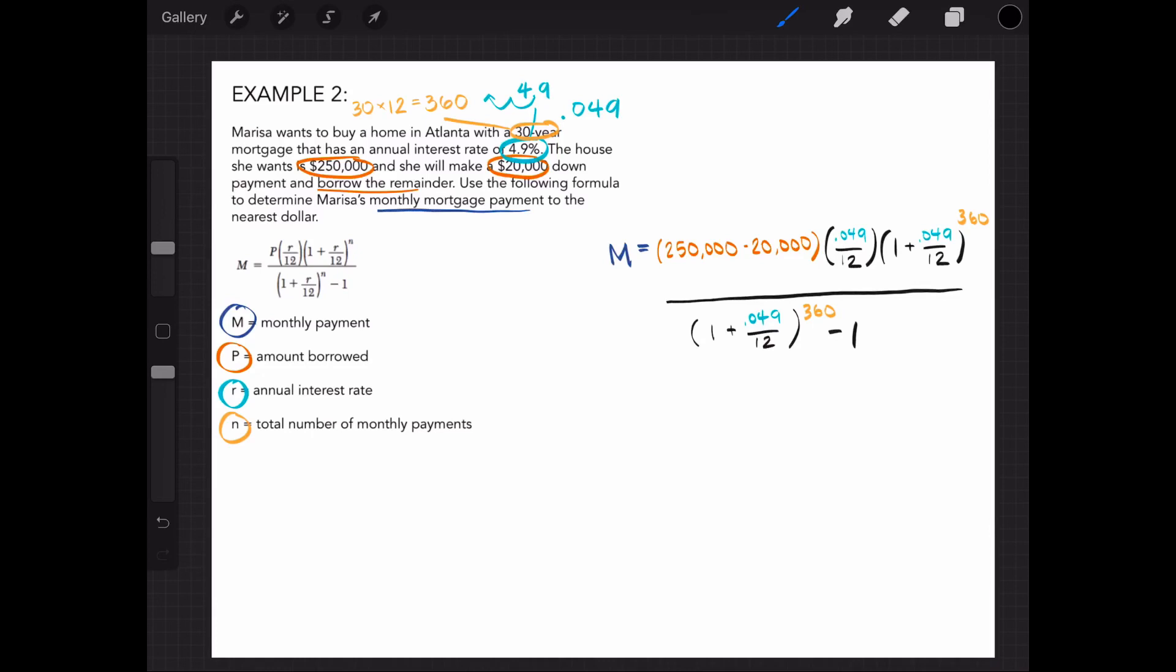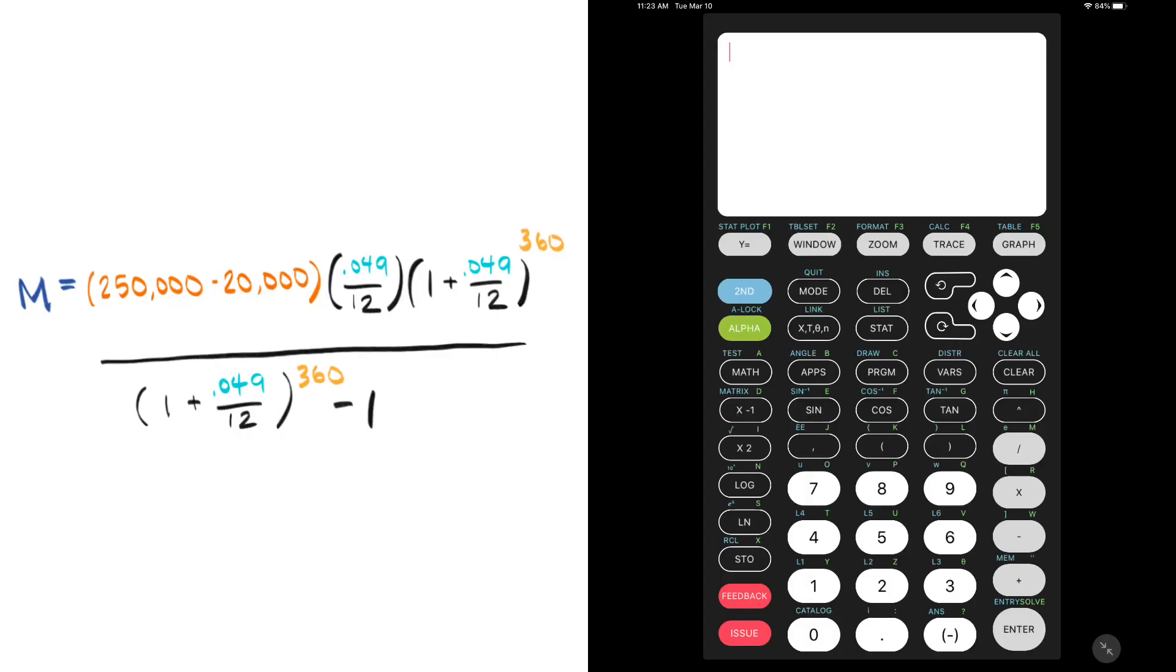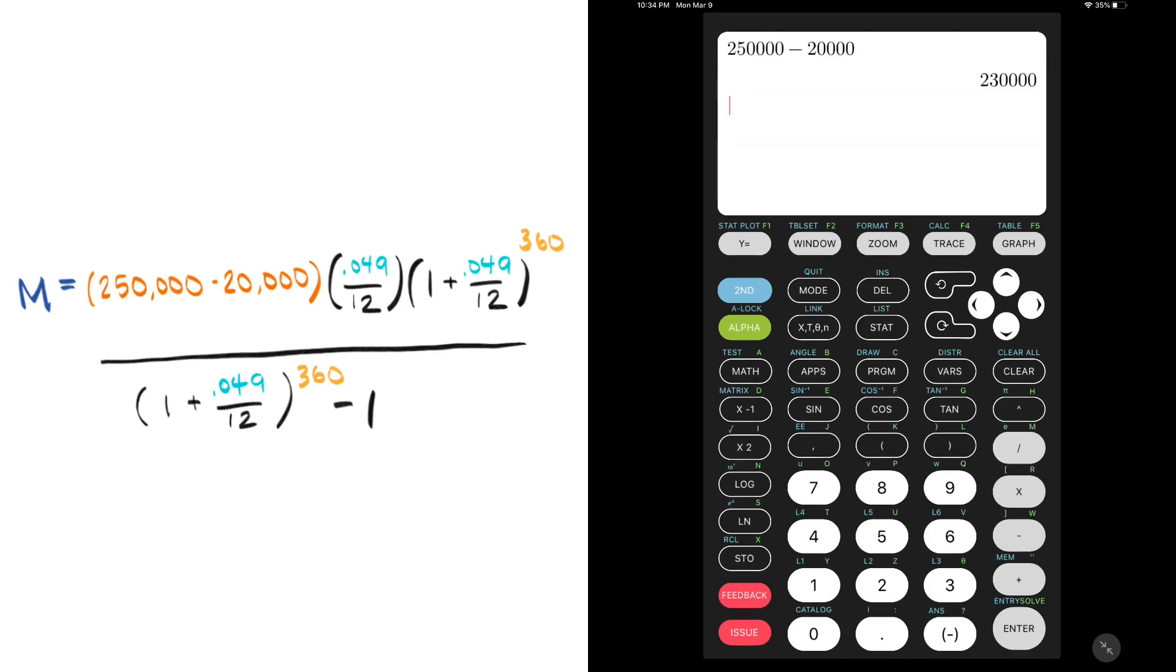In the previous Learn It video, I rounded some of those decimals, but in this video, I'll show you how to use a graphing calculator to solve the most accurate value. I'm going to start with the numerator at the top and go left to right. 250,000 minus 20,000 equals 230,000.